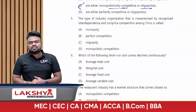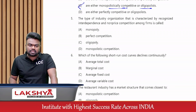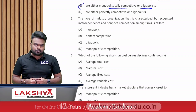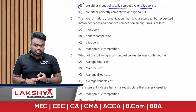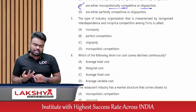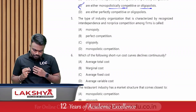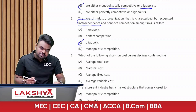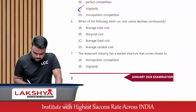The type of industry organization characterized by recognized interdependence and non-price competition among firms is called what? The features of oligopoly are: (1) strategic interdependence, (2) non-price competition, i.e., importance of selling cost and advertisement cost, and (3) group behavior. Interdependence is found in the oligopoly market — option C.